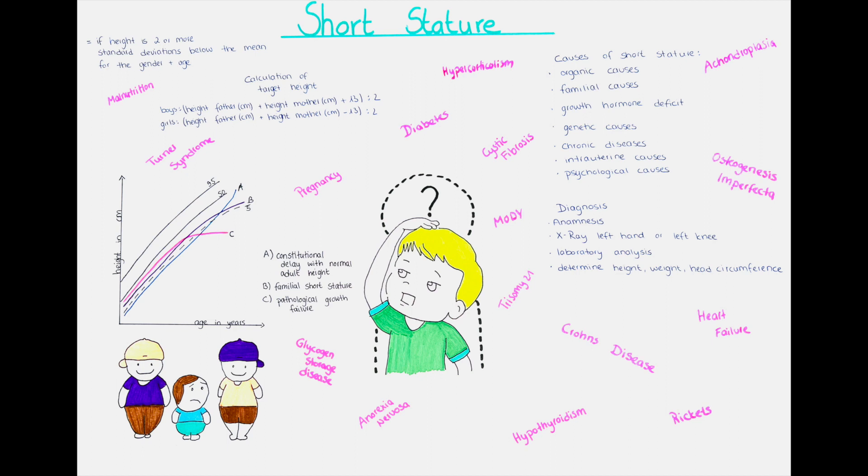The causes for a child being of short stature are of very different nature and include organic causes, familial causes, growth hormone deficit, a child being small for its gestational age or it might even be idiopathic.